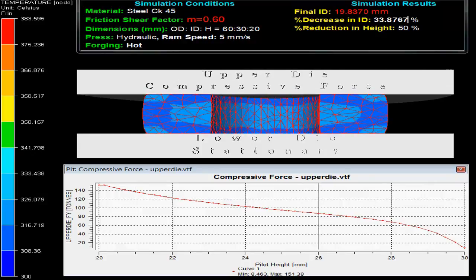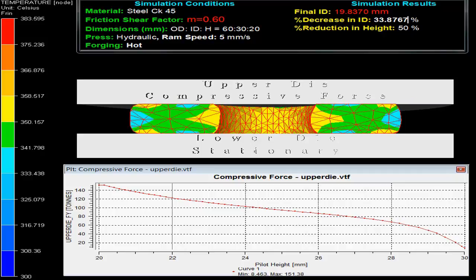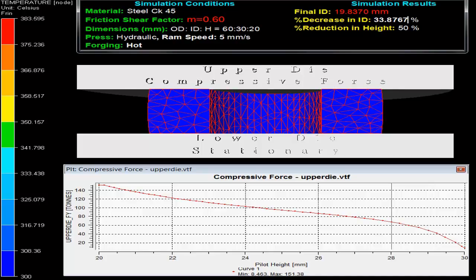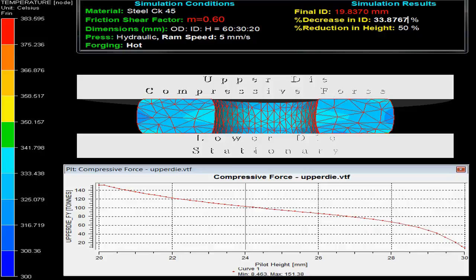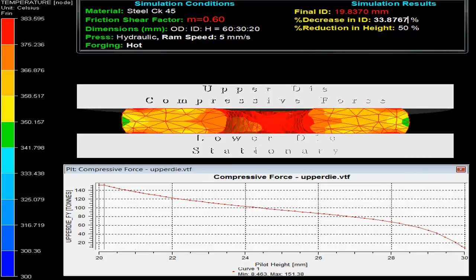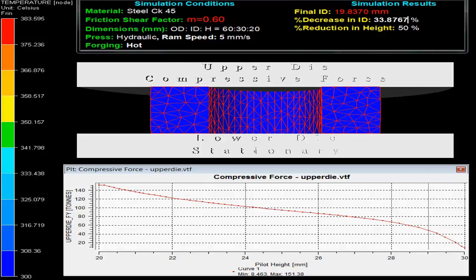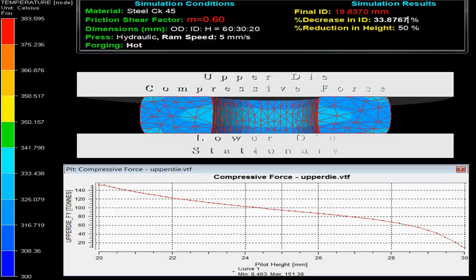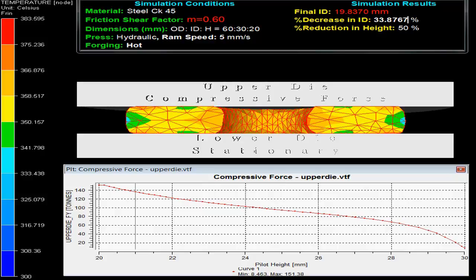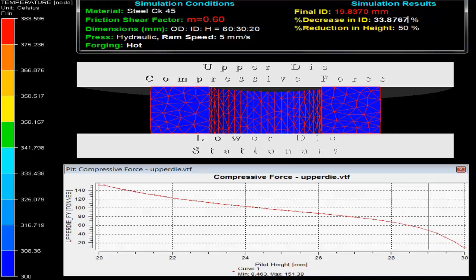The press uses hydraulic press with ramps with 5 mm per second and forging is done hot. On the top right side simulation results show the final inner diameter as 19.8 mm with decrease in inner diameter by 33.9% on 50% reduction in height.